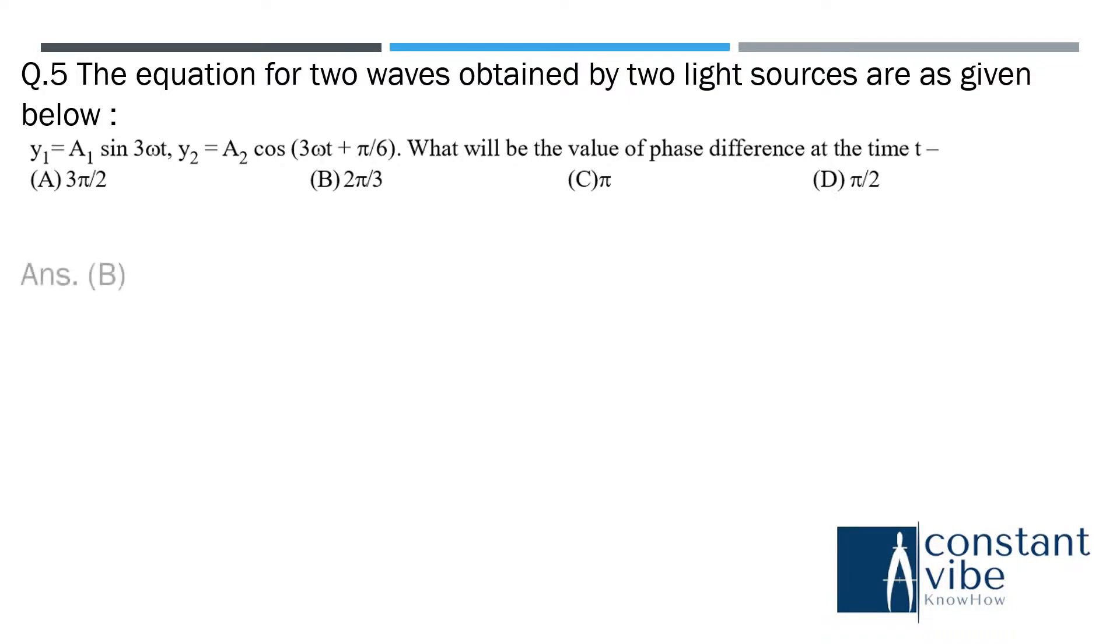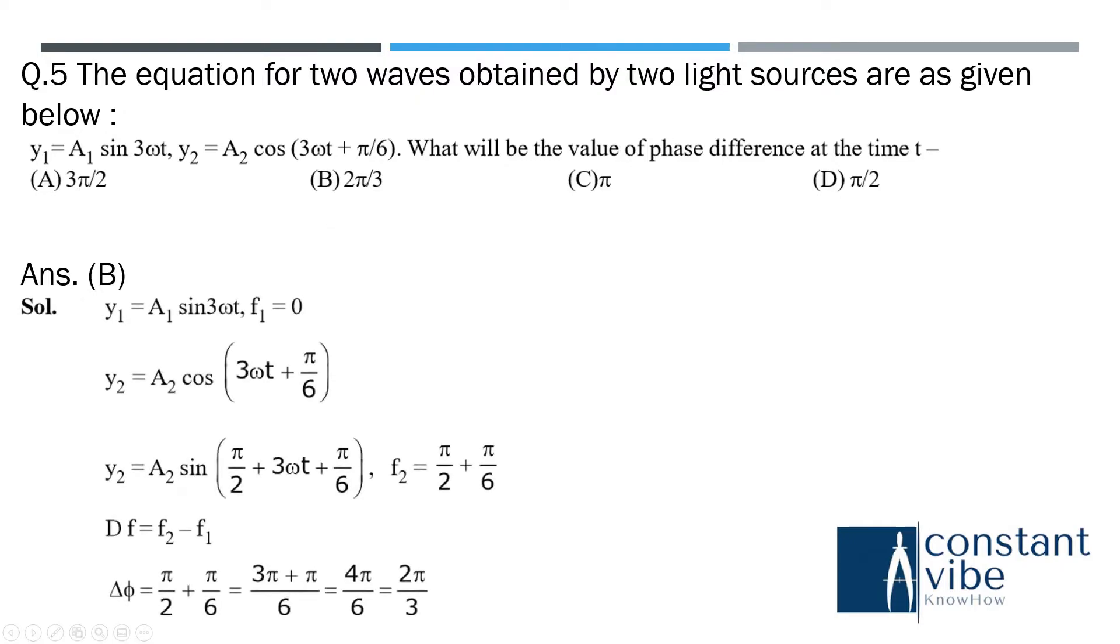Here the answer is B. And the solution method is: y1 is equal to A1 sin 3 omega t, if you set theta 0 here and we are applying this, we are simplifying this one, you will get 2 pi by 3. OK.